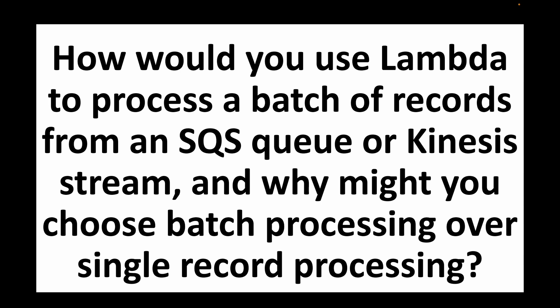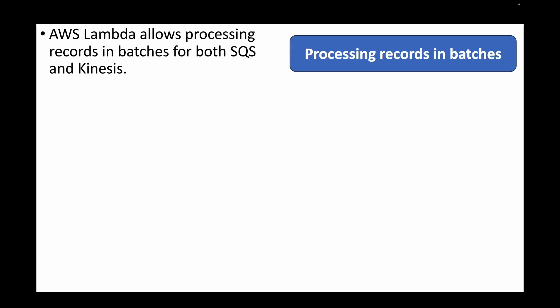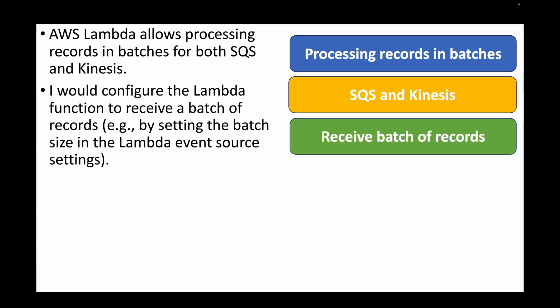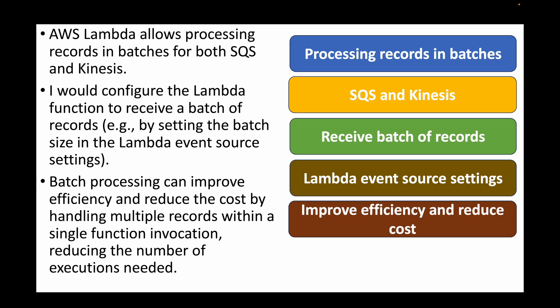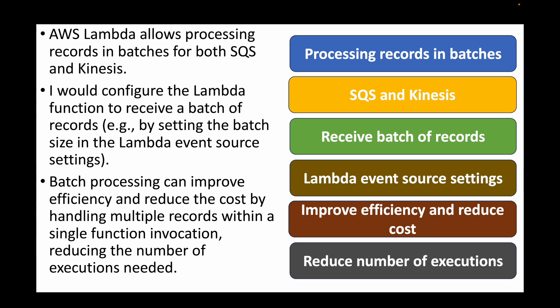The next question: how would you use Lambda to process a batch of records from an SQS queue or Kinesis stream, and why might you choose batch processing over single-record processing? AWS Lambda allows processing records in batch from both SQS and Kinesis. You can configure the Lambda function to receive a batch of records by setting the batch size in the event source settings. Batch processing improves efficiency and reduces cost because multiple records are handled within a single function invocation, reducing the total number of executions — and since Lambda charges by runtime and invocation count, this saves money.